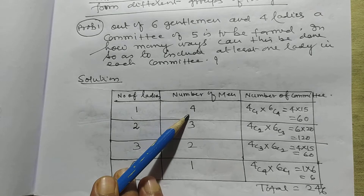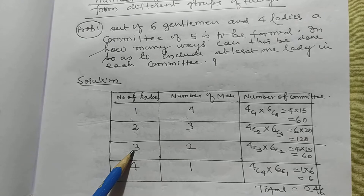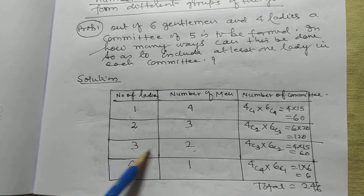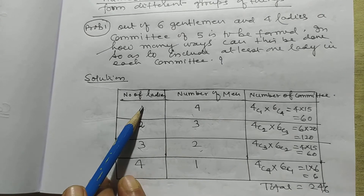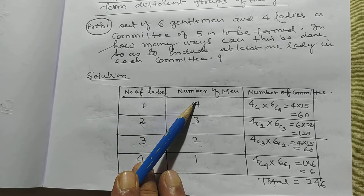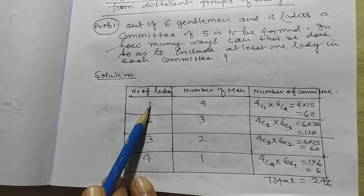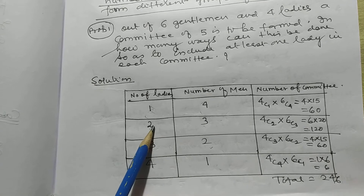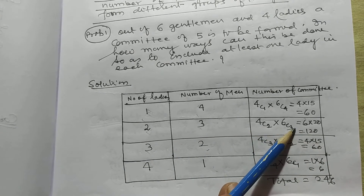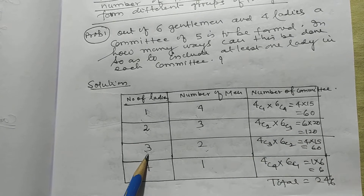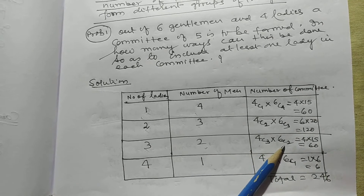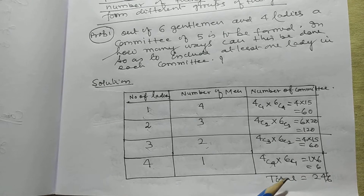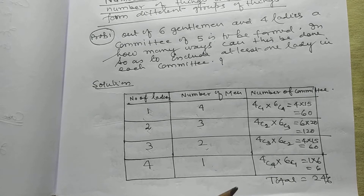Selecting ladies from 4 and men from 6: Case 1 (1 lady, 4 men): 4C1 × 6C4 = 4 × 15 = 60. Case 2 (2 ladies, 3 men): 4C2 × 6C3 = 6 × 20 = 120. Case 3 (3 ladies, 2 men): 4C3 × 6C2 = 4 × 15 = 60. Case 4 (4 ladies, 1 man): 4C4 × 6C1 = 1 × 6 = 6. Total = 60 + 120 + 60 + 6 = 246.